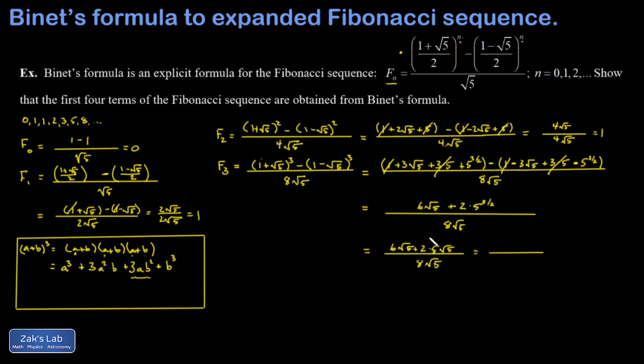Then I realize five to the three halves is just five root five. And so finally in the numerator, I have six root five plus ten root five, which is 16 root five divided by eight root five. And I get 16 divided by eight, which is two. So that works out.